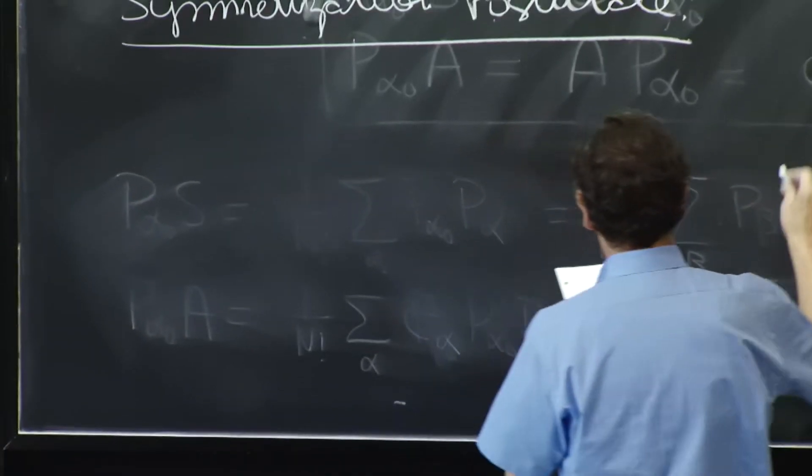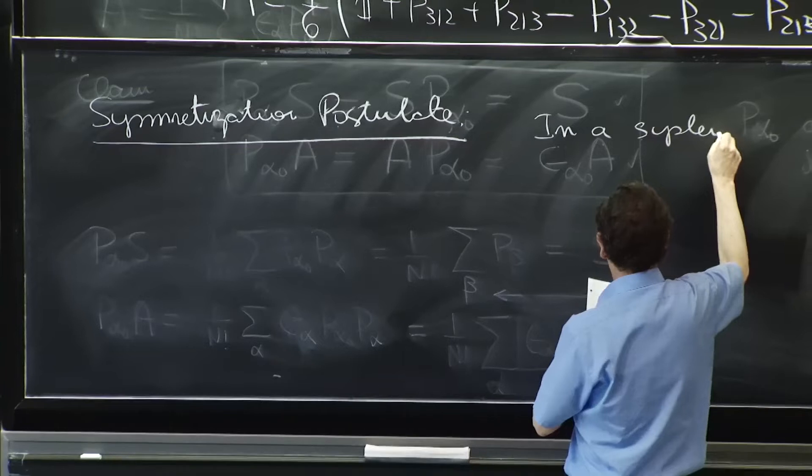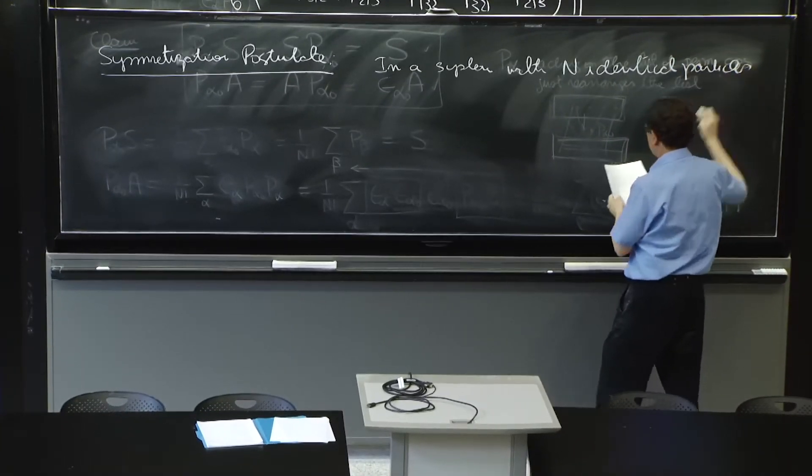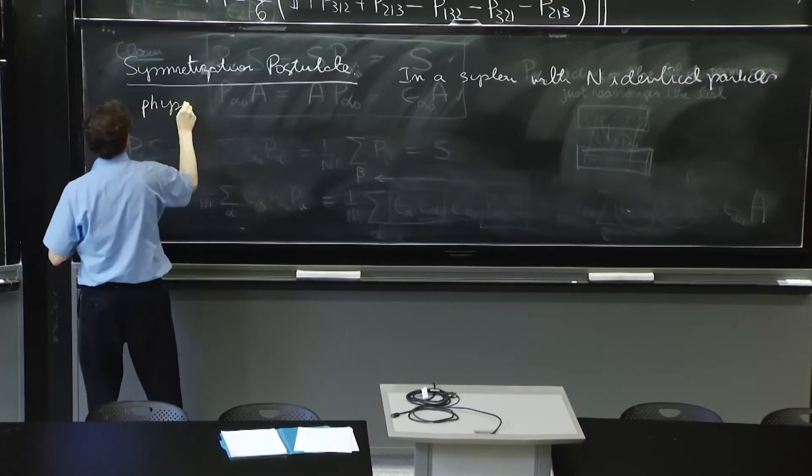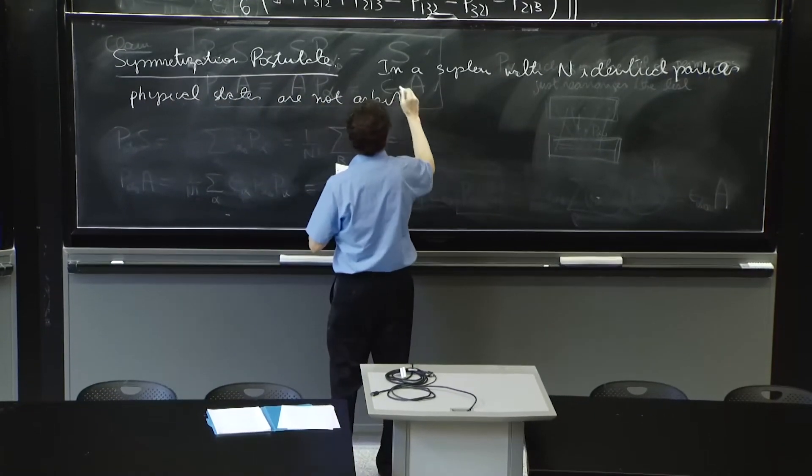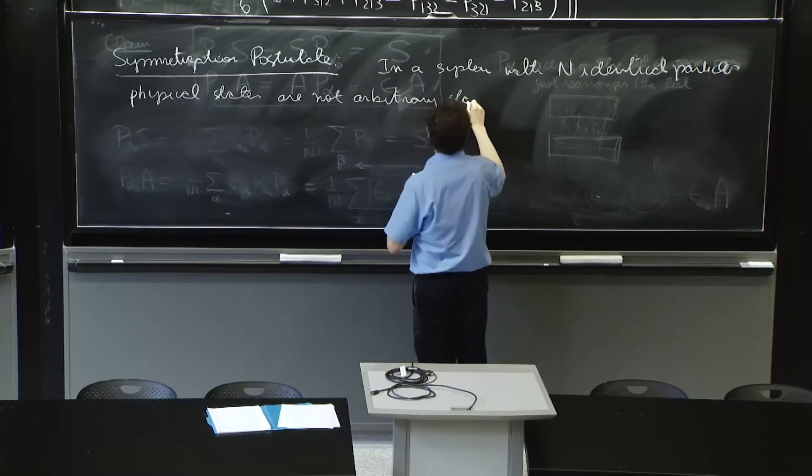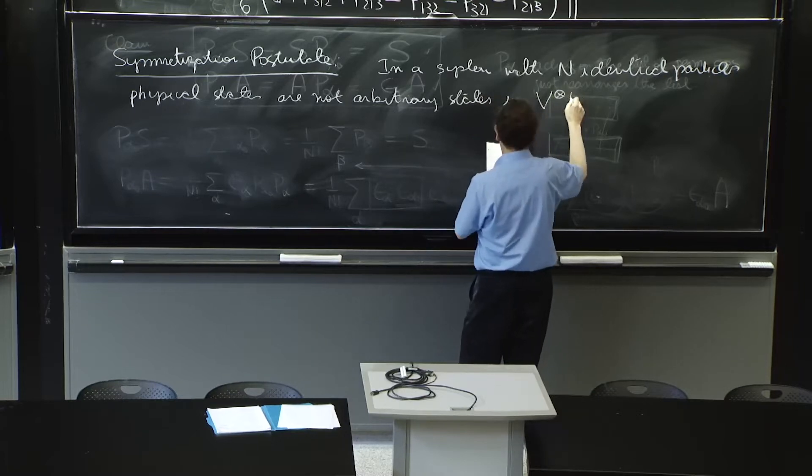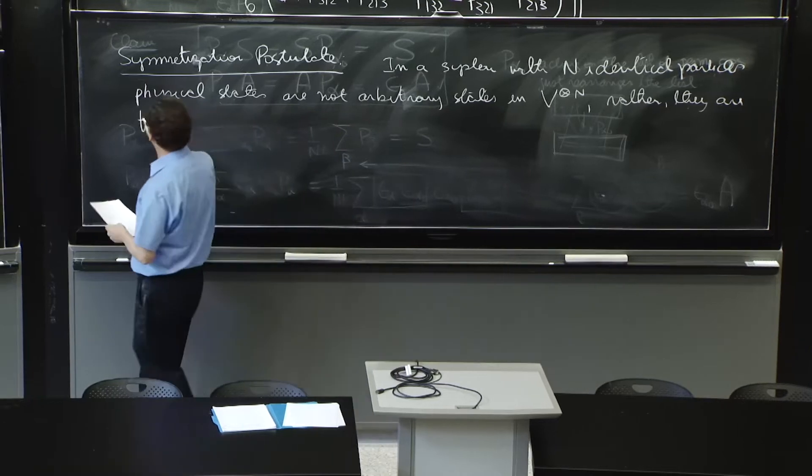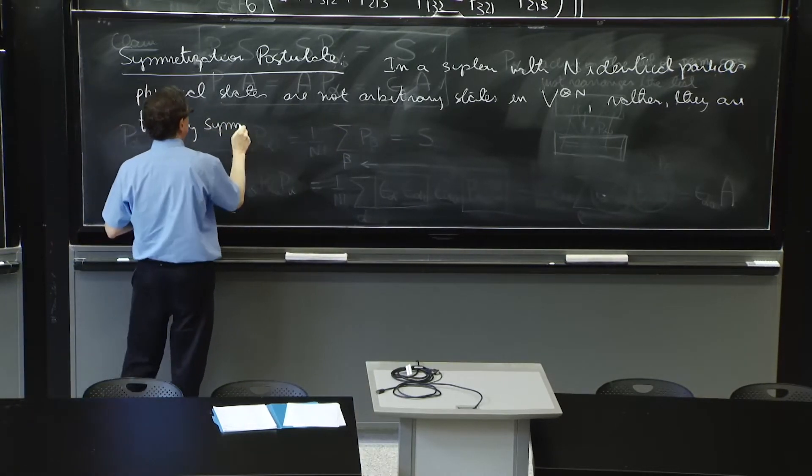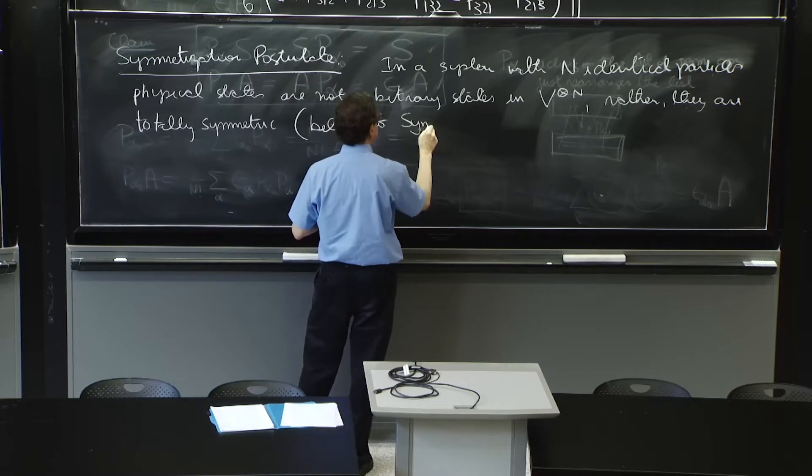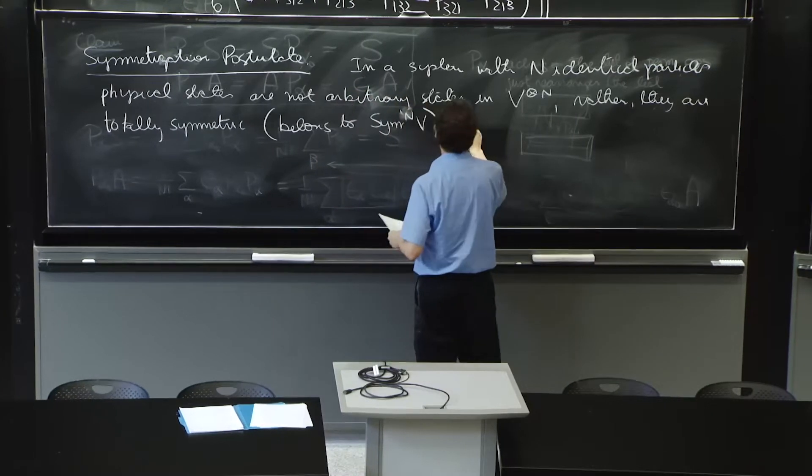The arbitrary state that is neither symmetric nor antisymmetric and all that is not a physical state of a system of identical particles. So let's state it here. In a system with n identical particles, physical states are not arbitrary states in v tensor n.